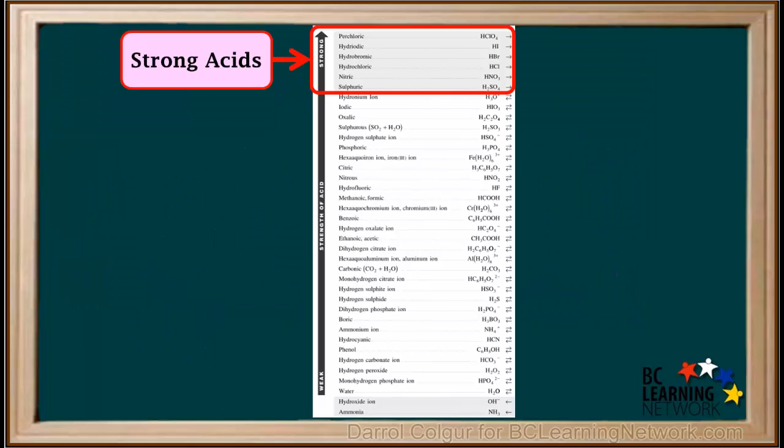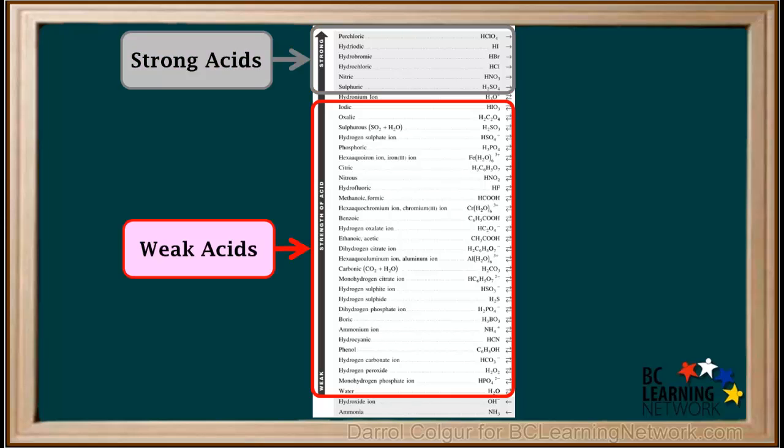You may recall that the six acids on the top left of the acid table are classified as strong acids. Remember, these are 100% ionized in aqueous solution. Species below hydronium on the left, all the way down to water, can act as weak acids. Some of these, including water, are amphiprotic, so they can also act as weak bases, as we'll see later.